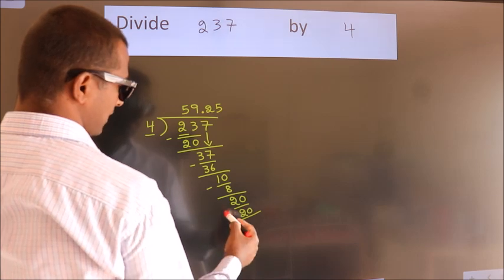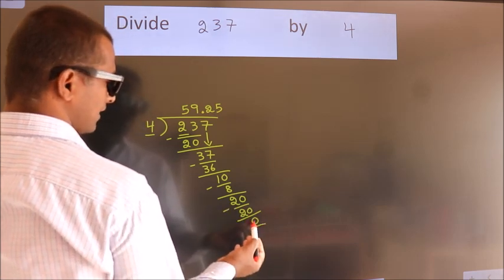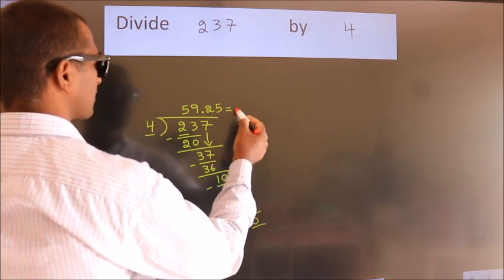Now we subtract. We get 0. We got remainder 0. So this is our quotient.